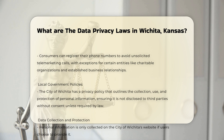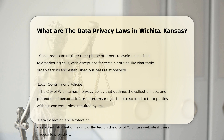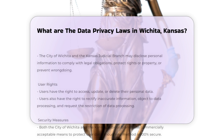Local Government Policies: The City of Wichita has its own privacy policy that outlines how personal information is collected, used, and protected. According to this policy, the City will not disclose personal information to third parties without consent, except in cases required by law or to protect the City's rights and property.